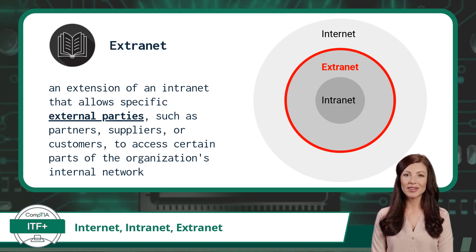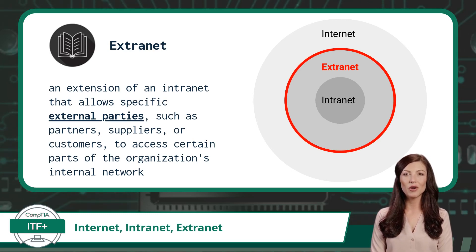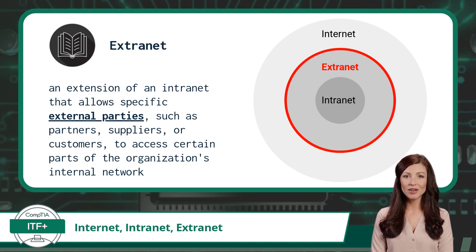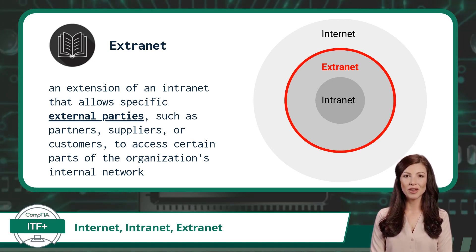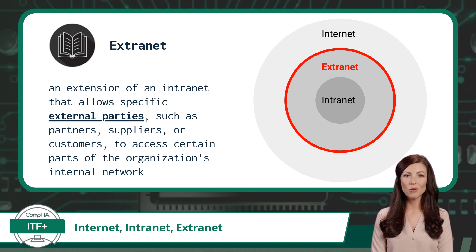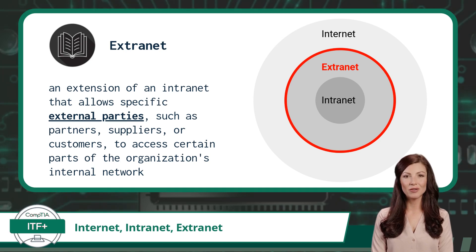An extranet is an extension of an intranet that allows specific external parties, such as partners, suppliers, or customers, to access certain parts of the organization's internal network. It provides a secure and controlled way for external entities to collaborate and share information with the organization, while keeping sensitive data separate from the public internet.